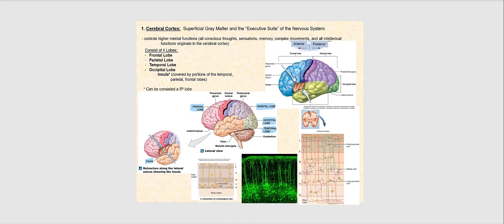The cerebral cortex is the outermost layer of the cerebrum that consists of superficial gray matter — the so-called executive suite of the nervous system. It's referred to as the executive suite because it controls higher mental functions: all our conscious thoughts, sensations, memory, complex movements, and all intellectual functions originate in the cerebral cortex.